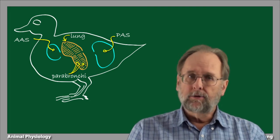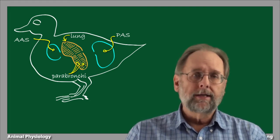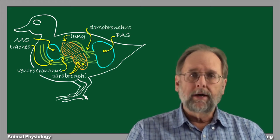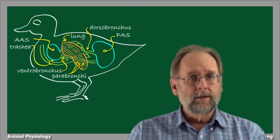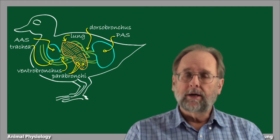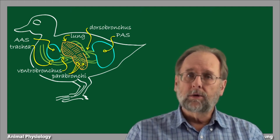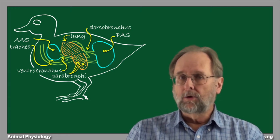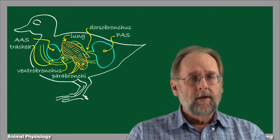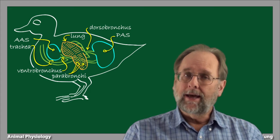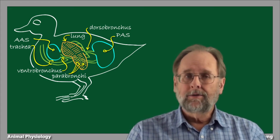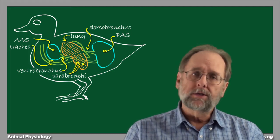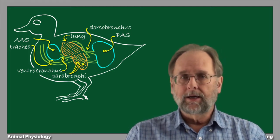The air sacs, lungs, and trachea are connected together in a complex series of airways. The posterior air sacs are fed by the trachea and bronchi. The posterior air sacs, in turn, feed into a complicated array of airways known collectively as the dorsobronchus. The lung is also connected to the anterior air sacs by another large collection of airways known as the ventrobronchus. The ventrobronchus also feeds back into the trachea.